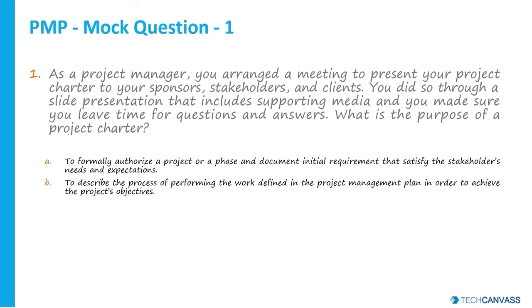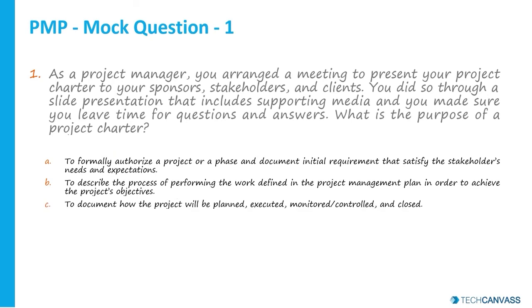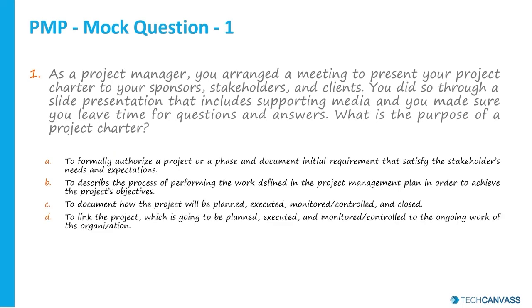Option B: to describe the process of performing the work defined in the project management plan in order to achieve the project objectives. Option C: to document how the project will be planned, executed, monitored and controlled, and closed. And option D: to link the project which is going to be planned, executed, and monitored and controlled to the ongoing work of the organization.